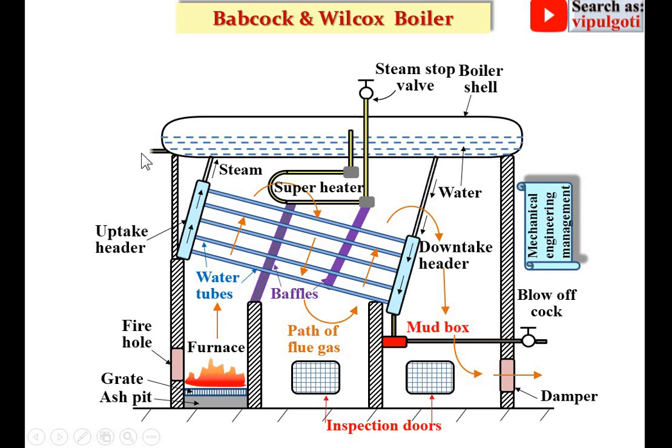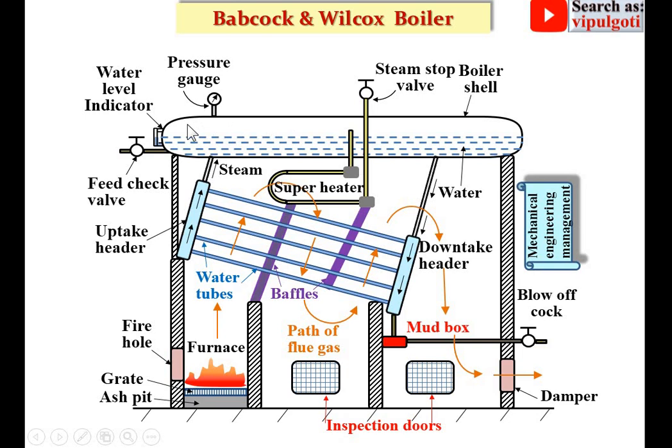This is the feed check valve. With the help of the feed check valve, you can supply water into the boiler shell. This is the water level indicator — with the help of that, you can see the water level in the boiler shell. This is the pressure gauge — with the help of that, you can measure the pressure of the steam inside the boiler shell.